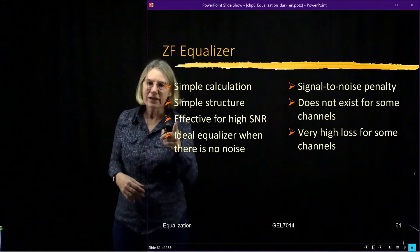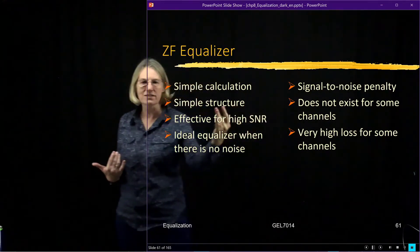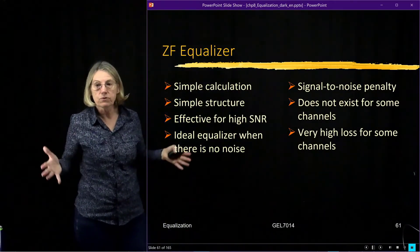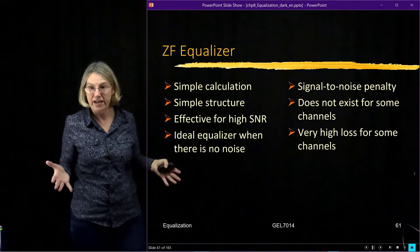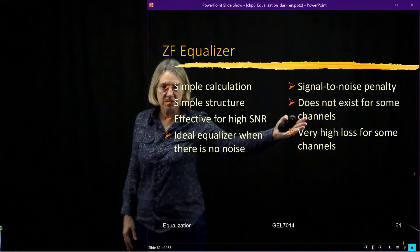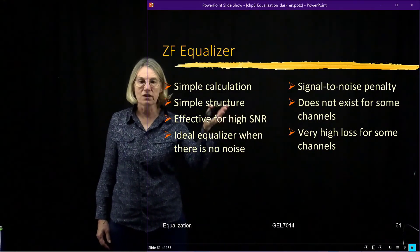The problem is when there is noise. So there's a signal to noise ratio penalty associated with using the zero forcing. Of course we saw that the zero forcing equalizer does not exist for all channels. Channels with severe fades, with nulls, really the zero forcing equalizer doesn't exist.